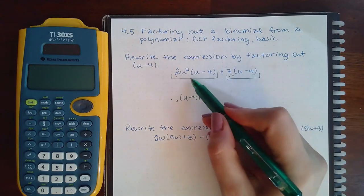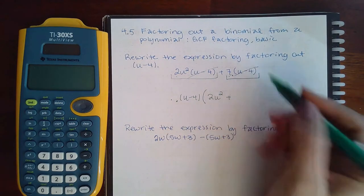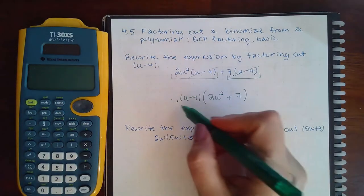So the only thing I'm going to factor out is the (u-4). Now if I take (u-4) from this term, I'm left with u squared. And if I take the (u-4) from this term, I am left with the 7. And so that is the problem factored.